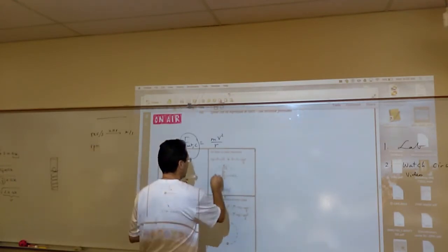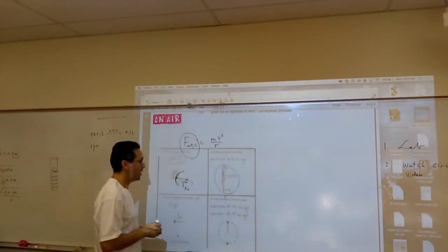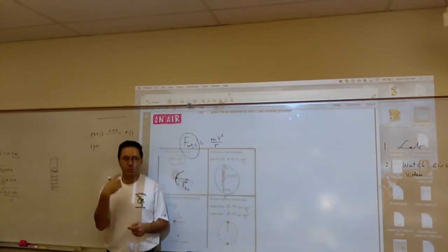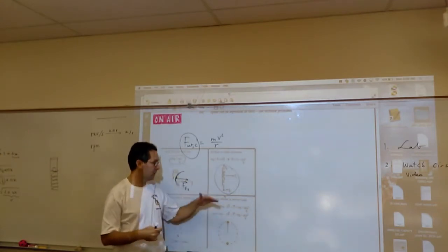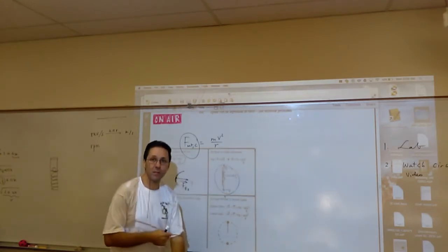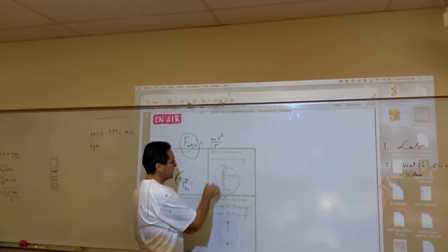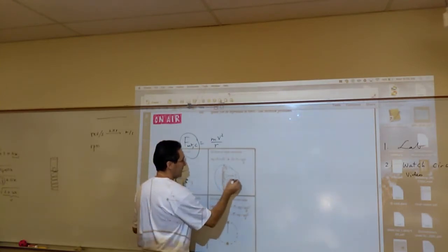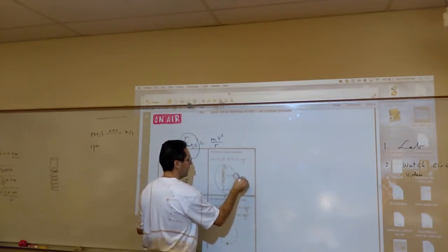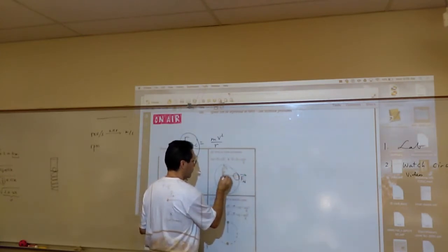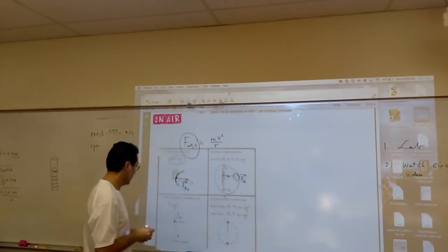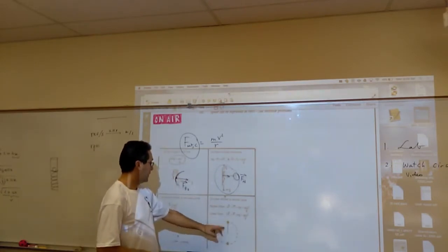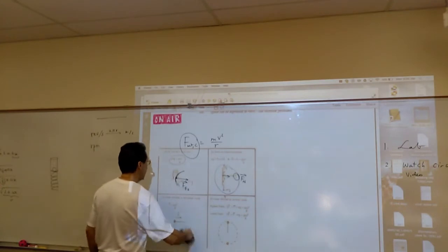This is a ride you have in some amusement parks where you lean against the wall and they start to spin you, then the floor drops. In this case, if you look at the free body diagram, the centripetal force is really the normal force — the push of the wall on you. Now let's look at an application.